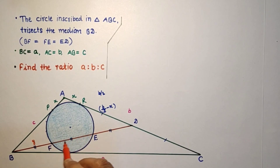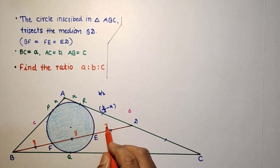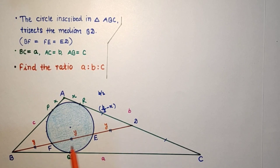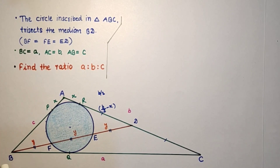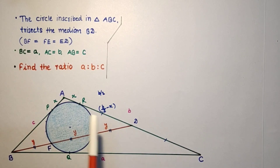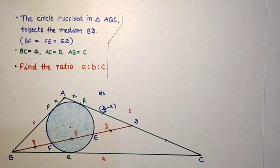Let each of the 3 equal parts be Y, so BF equals Y, FE equals Y, and ED equals Y. Therefore BD equals 3Y. Since the two tangents from an external point are equal, BQ equals BP and CQ equals CR.